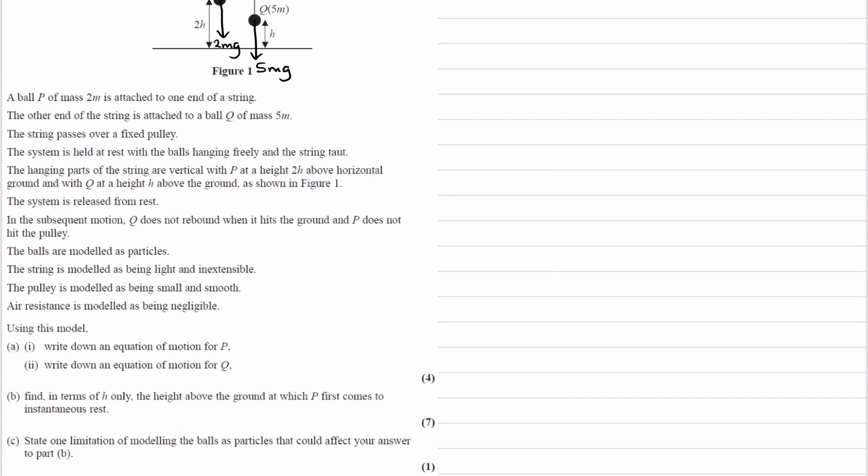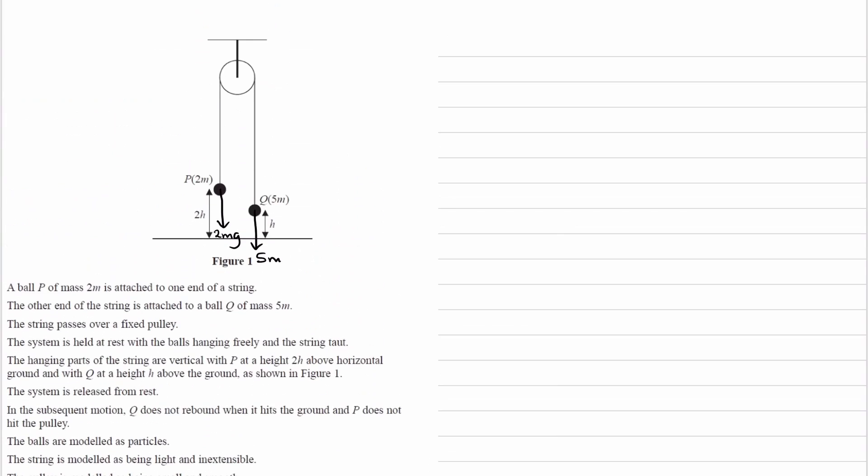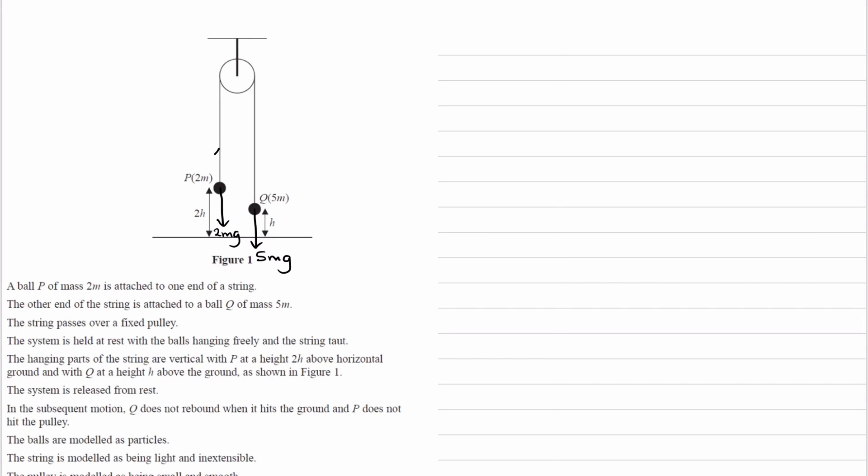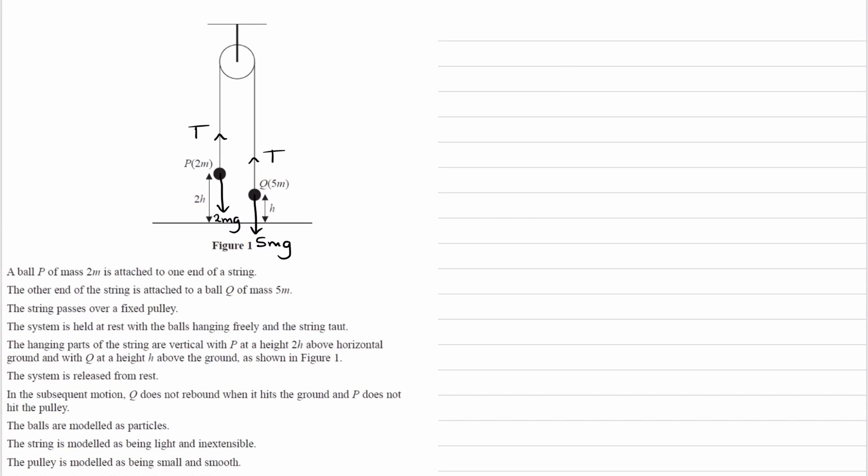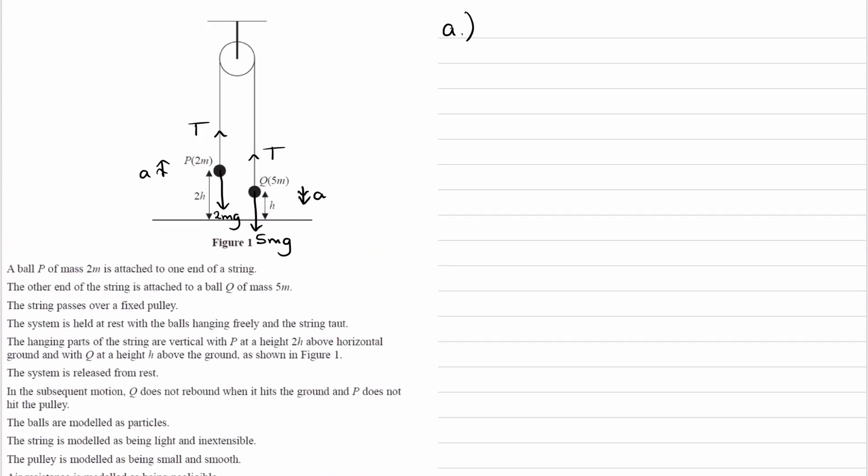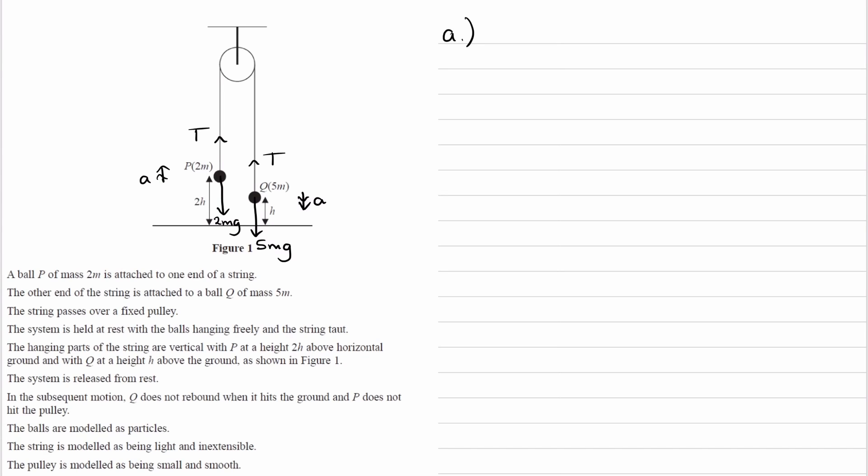And then using the model we want to find out the equations of motion for P and Q, so let's draw on our tension onto this diagram. So T is this way, T is this way, and we know that Q is the heavier mass, so that would mean that the acceleration of Q is downwards, and the acceleration of P is upwards. So for part A, we want to write out our equations of motion, so let's start with Q.